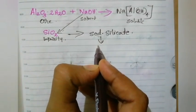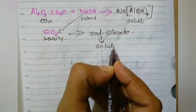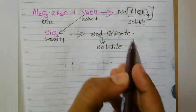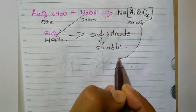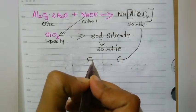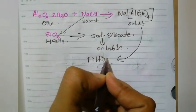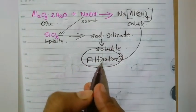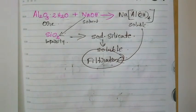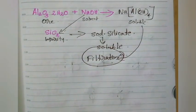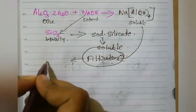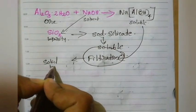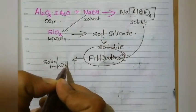Now we have a clear solution containing the aluminum complex and sodium silicate — both are soluble. To separate aluminum from these impurities, we first filtrate the solution, because the insoluble impurities form the sludge. In order to remove that sludge, we filtrate the solution. Insoluble impurities can be removed through filtration.